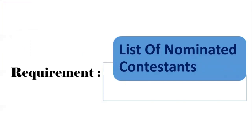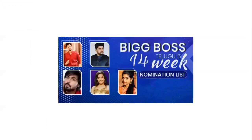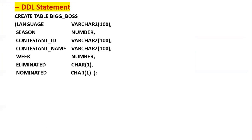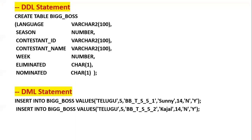Now we start the actual requirements. The first requirement is to display the list of nominated contestants for the particular week. I have taken Telugu Big Boss season 5 and the 14th week nomination. First, we need to create the Big Boss table. The columns include: language (Telugu, Hindi, Tamil), season number, contestant ID, contestant name, week, eliminated (whether the contestant is eliminated), and nominated (whether the contestant is nominated for the particular week). Using a DML INSERT statement, I have created some dummy data, and TCL COMMIT is used to store it permanently.